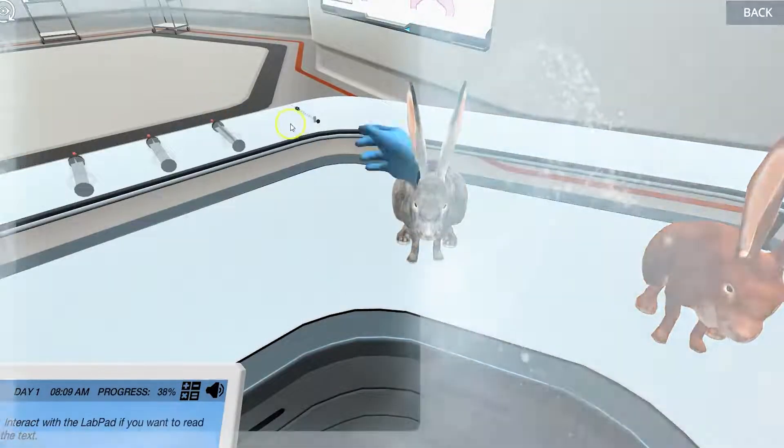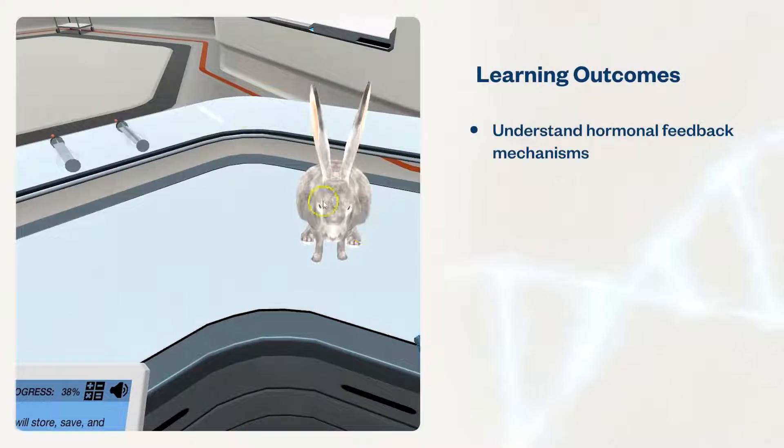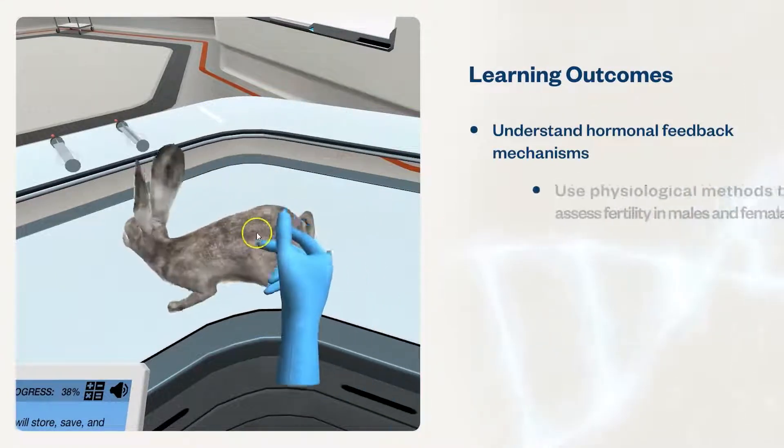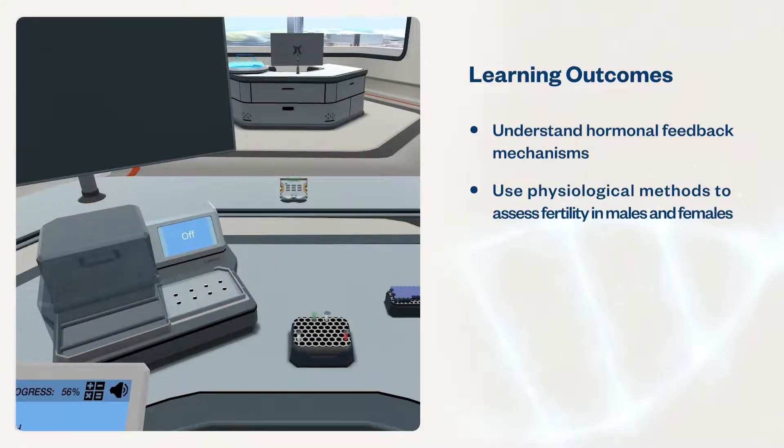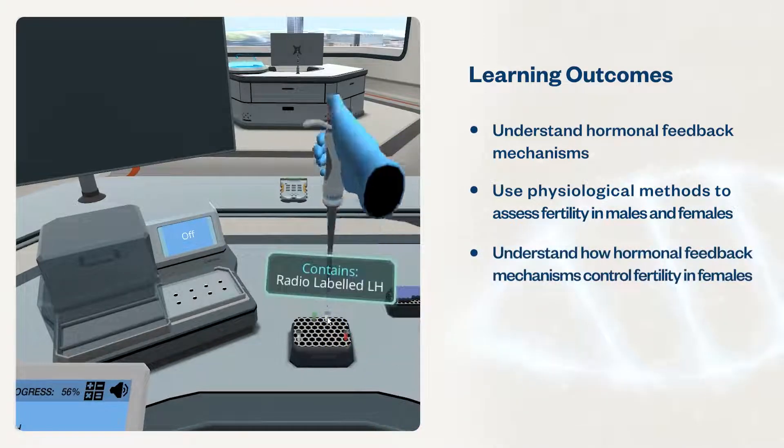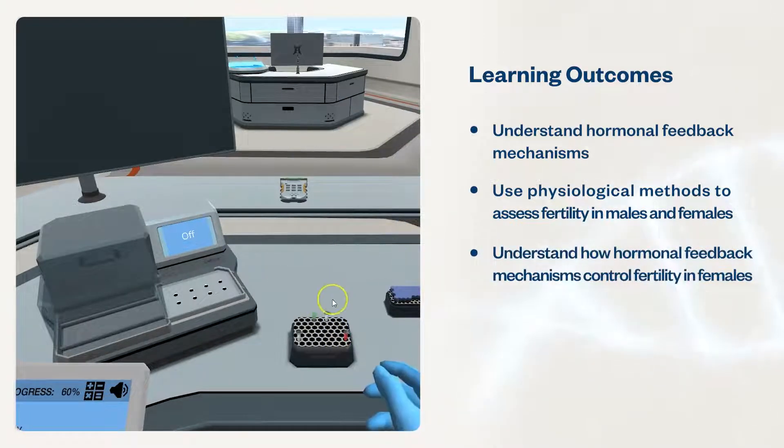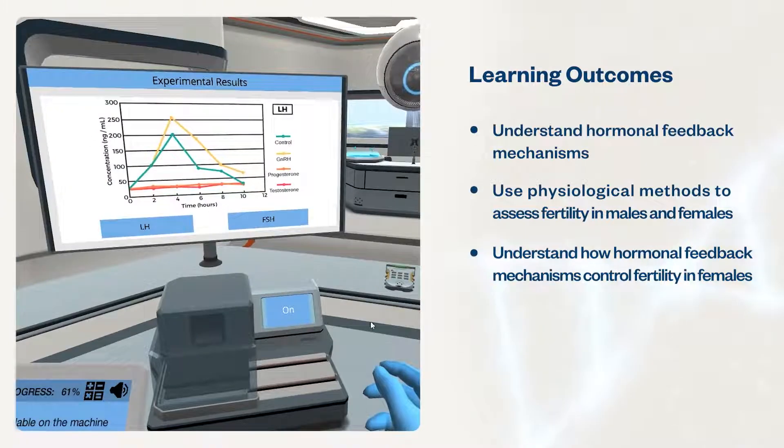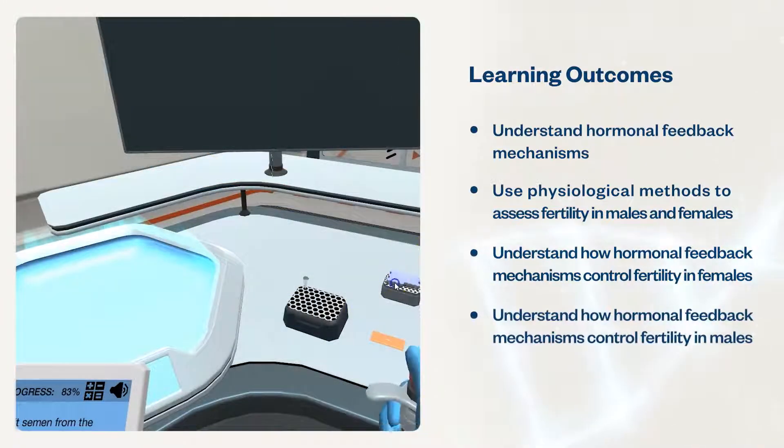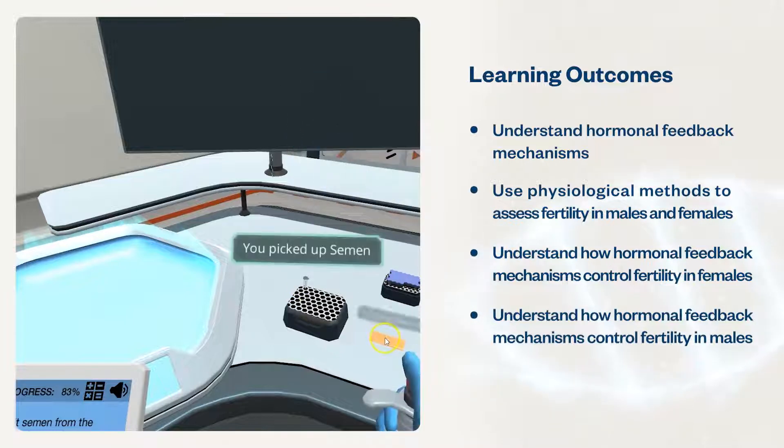These simulations will help students understand hormonal feedback mechanisms and use physiological methods to assess fertility in males and females. Specifically, they'll learn how LH, FSH, progesterone, and estrogen control fertility and ovulation in females, and how LH, FSH, and testosterone control fertility in males.